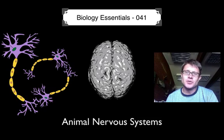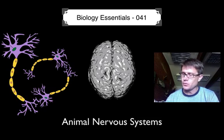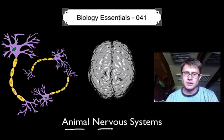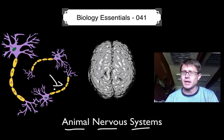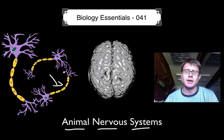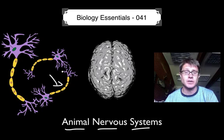Hi, it's Mr. Andersen and welcome to Biology Essentials video 41. This is on the animal nervous system. Most of this podcast I'm going to be talking about neurons, how they send messages called action potentials, and how they can eventually jump across synapses.